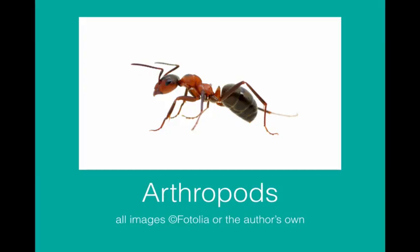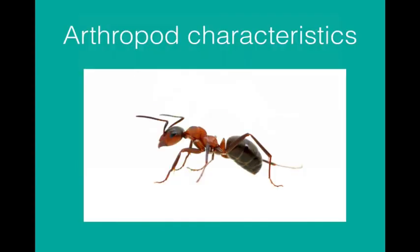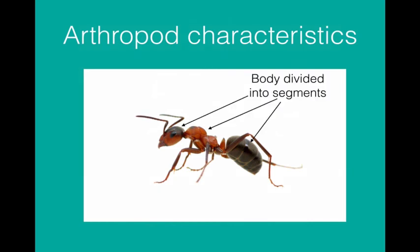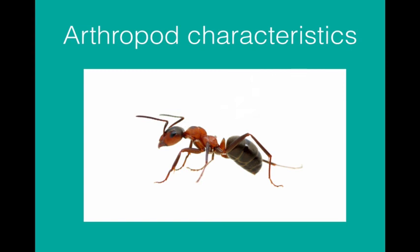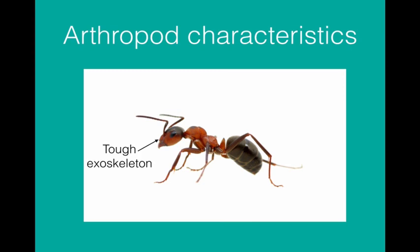This video is going to look at one of the five phyla of animals, namely the arthropods or Arthropoda. The arthropods share a number of different characteristics. These include a body that is divided into various segments, jointed legs — which is what 'arthropod' means — and a tough exoskeleton.